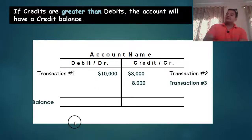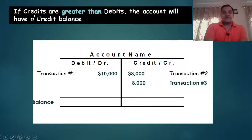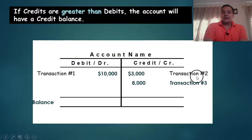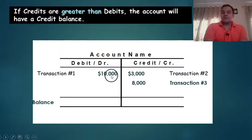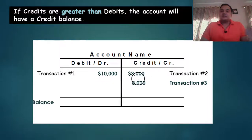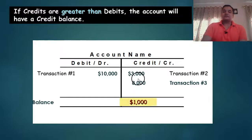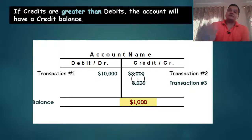If credits are greater than the debit, the account will have a credit balance. For example, transactions 2 and 3: 3,000 plus 8,000 equals 11,000 on the credit side, and 10,000 on the debit side. So there is 1,000 excess on the credit side, which becomes a 1,000 credit balance.